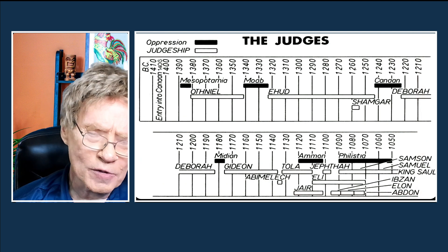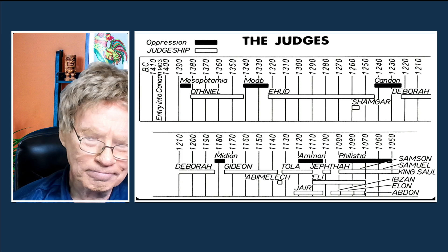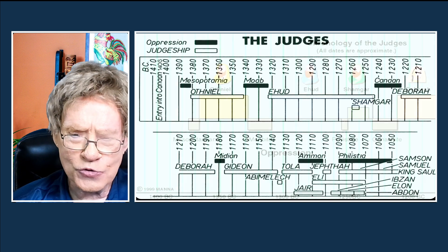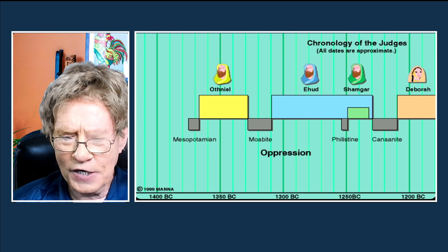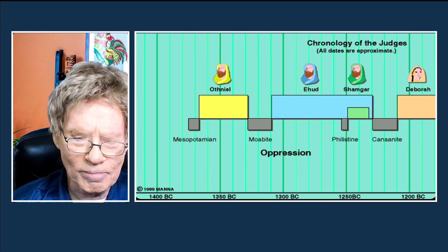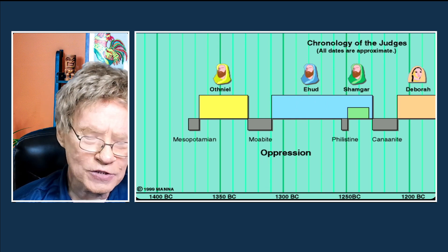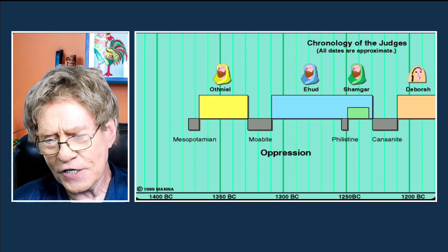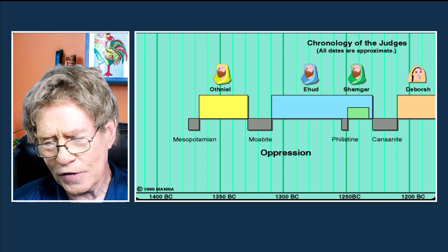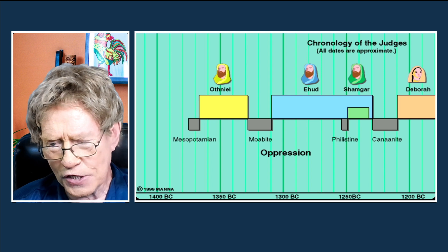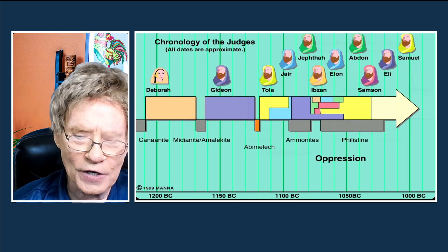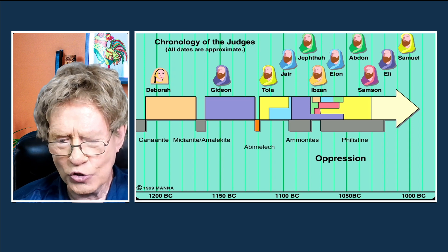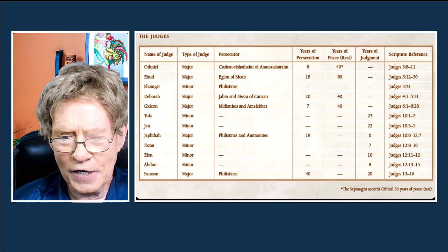Another chart depicts the judges and the oppression that Israel faced in the book. There is also a book from Mana Maps — Carl Henecke and Matt Henecke were involved in this project. Some very good material there; if you look them up on the internet you can find good material there.